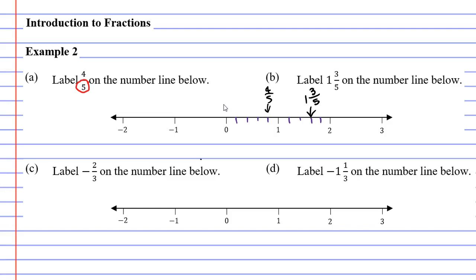Let's now move on to question C. You'll notice that the denominator has changed for question C. Our denominator is 3 this time. For question D it is also going to be a 3. You'll also notice that we have negative fractions this time.